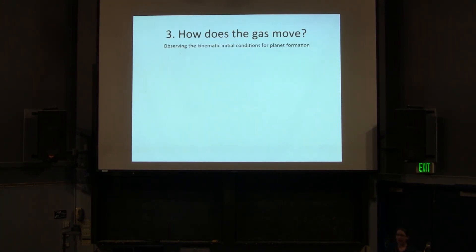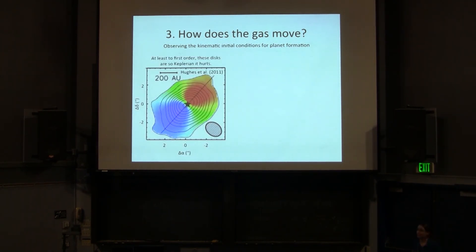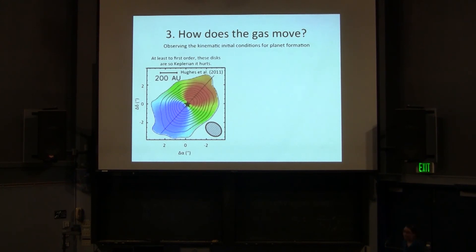Now let's talk about how gas moves in the disk — the dynamical initial conditions for planet formation. To first order, these disks are so Keplerian it's remarkable. When you make moment maps showing spider diagrams in circumstellar disks, they're incredibly regular. With ALMA observations, you can make a map of a disk and put it next to a model, and it's actually hard to tell which is the model and which is the data. These things are very, very Keplerian. But our high sensitivity now lets us start looking for deviations from Keplerian rotation that can tell us about how material is moving and what temperatures and densities are present.